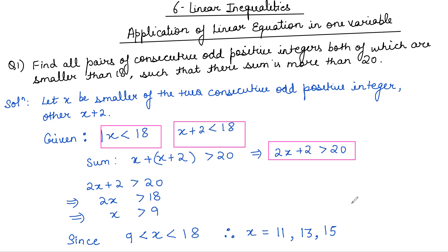What are we asked? Find all pairs — that is ordered pairs (x, y). Consecutive means one after another. We are talking about odd positive integers: 1, 3, 5, 7, 9, 11 and so on. Consecutive odd positive integers means if you start with 1, the next consecutive odd positive integer will be 3; after 3 comes 5. These are consecutive odd positive integers.